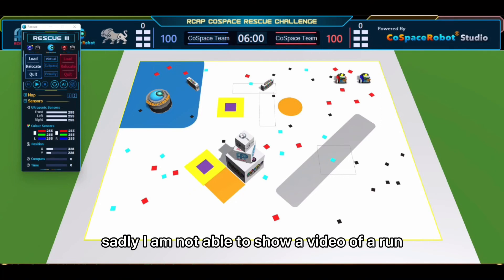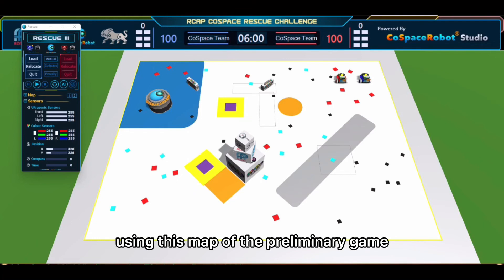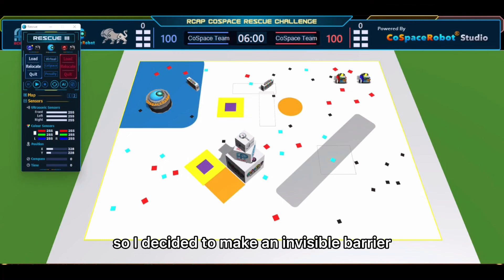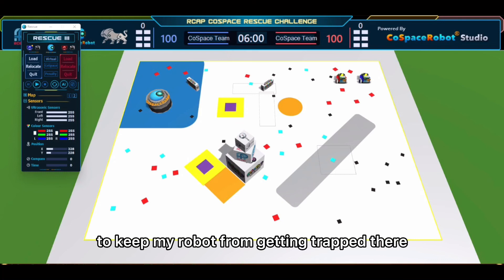Sadly, I am not able to show a video of a run, so I shall describe what happened using this map of the preliminary game. Whenever I ran the game, after a few seconds, my robot would usually get stuck between this trap and the obstacle when it has items that it picked up. So I decided to make an invisible barrier to keep my robot from getting trapped there and spending time to get out.